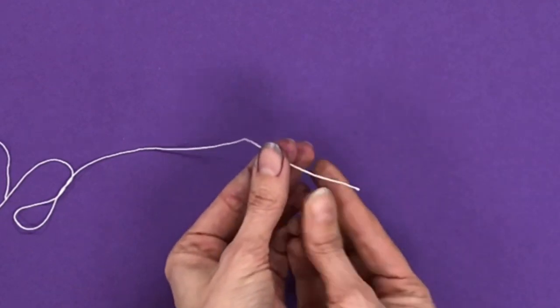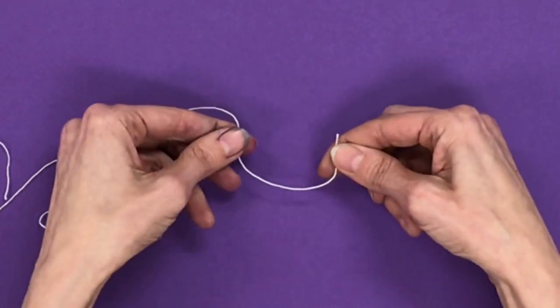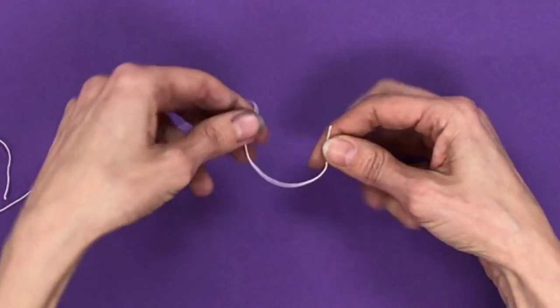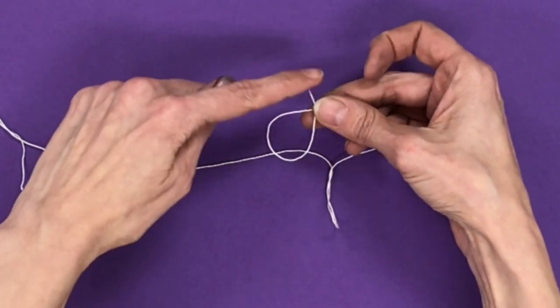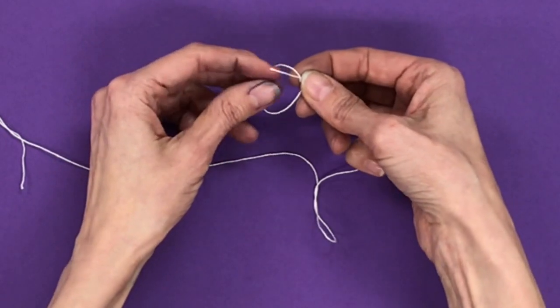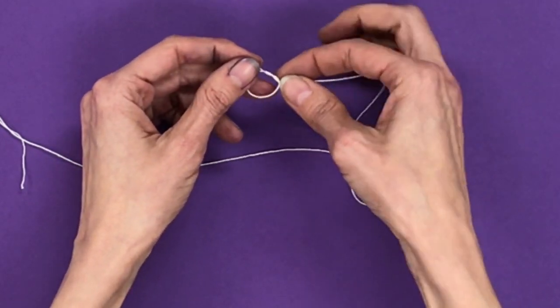On the opposite end of the thread, you're going to need to tie a knot. To do that, make the letter U, then create the letter O. Take the tail that you see at the top, fold it around, put it inside the O, and pull.